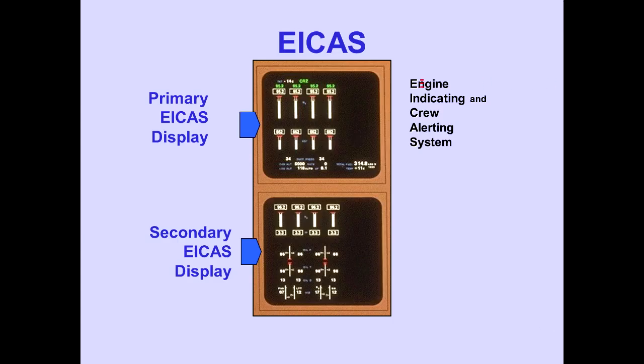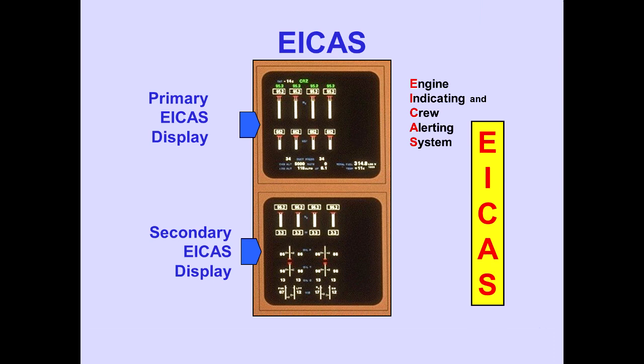An engine indicating and crew alerting system, or EICAS, provides engine and airplane systems indications and crew alerting messages on the primary EICAS display, and additional engine and system indications on the secondary EICAS display.